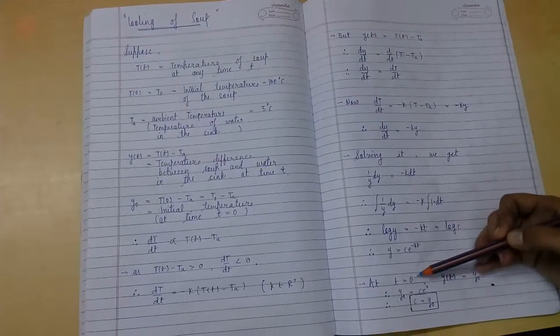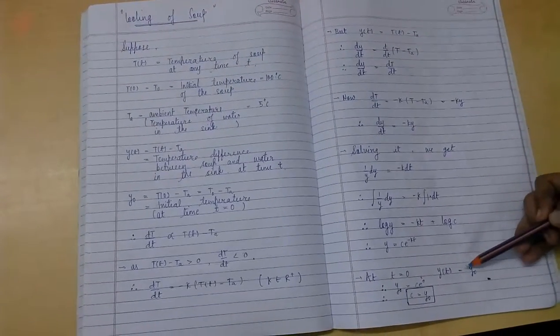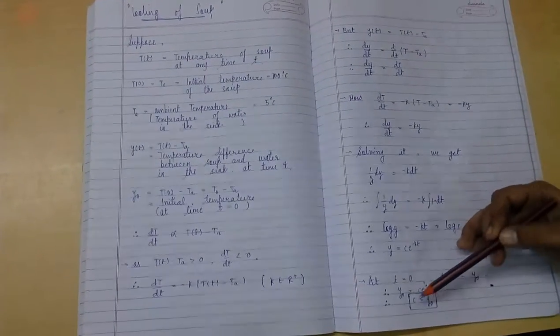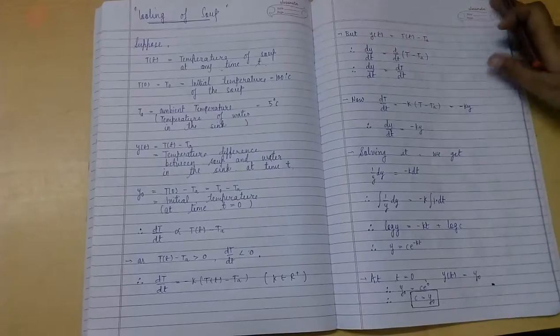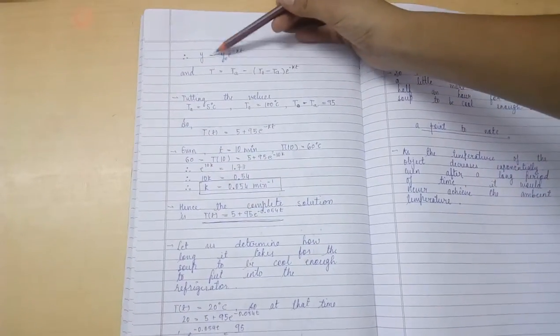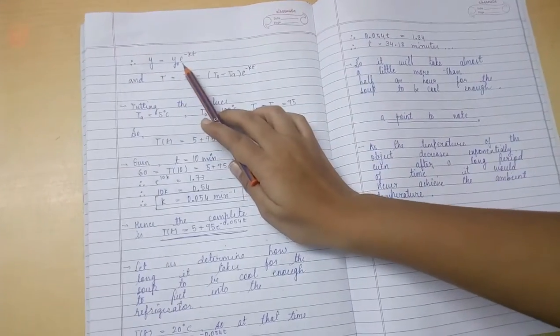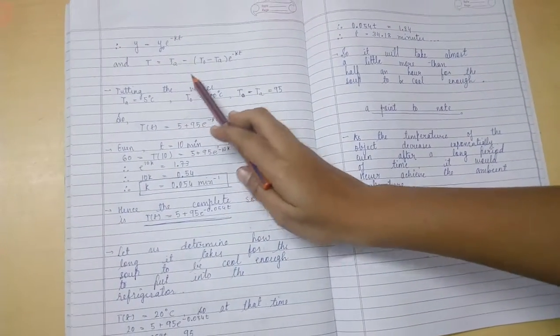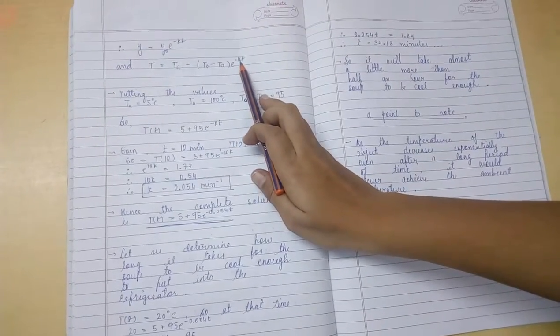At time t is equal to 0, Y(0) is equal to Y0. Therefore, Y0 is equal to C e raised to 0. Therefore, C is equal to Y0. Therefore, Y is equal to Y0 e raised to minus K t. And T is equal to Ta plus T0 minus Ta e raised to minus K t.